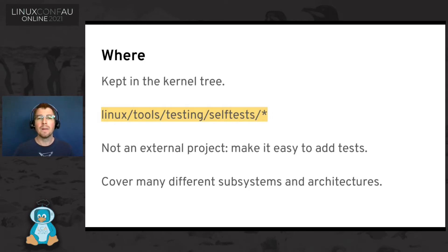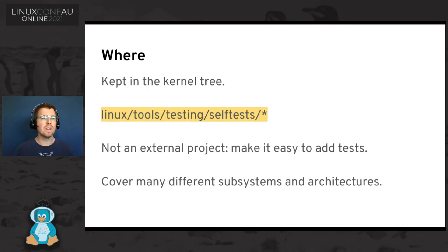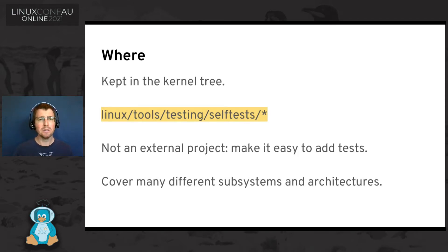Some of them are not unit tests at all — they're really big and complicated. They're kept in the kernel tree, which is a simple place to put them; they're not in an external project. That makes it easy for kernel developers to add tests. They're in the tools/testing/selftests directory, with many sub-directories for various subsystems — networking tests, architecture-specific tests, Ftrace, RCU, and more — managed mostly by the relevant subsystem.